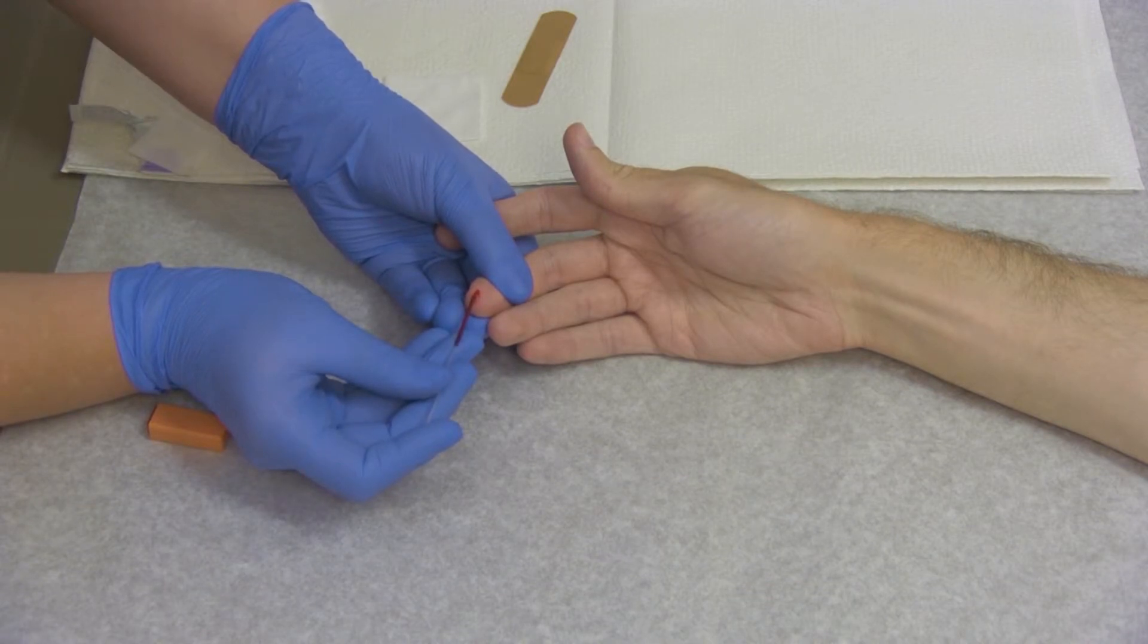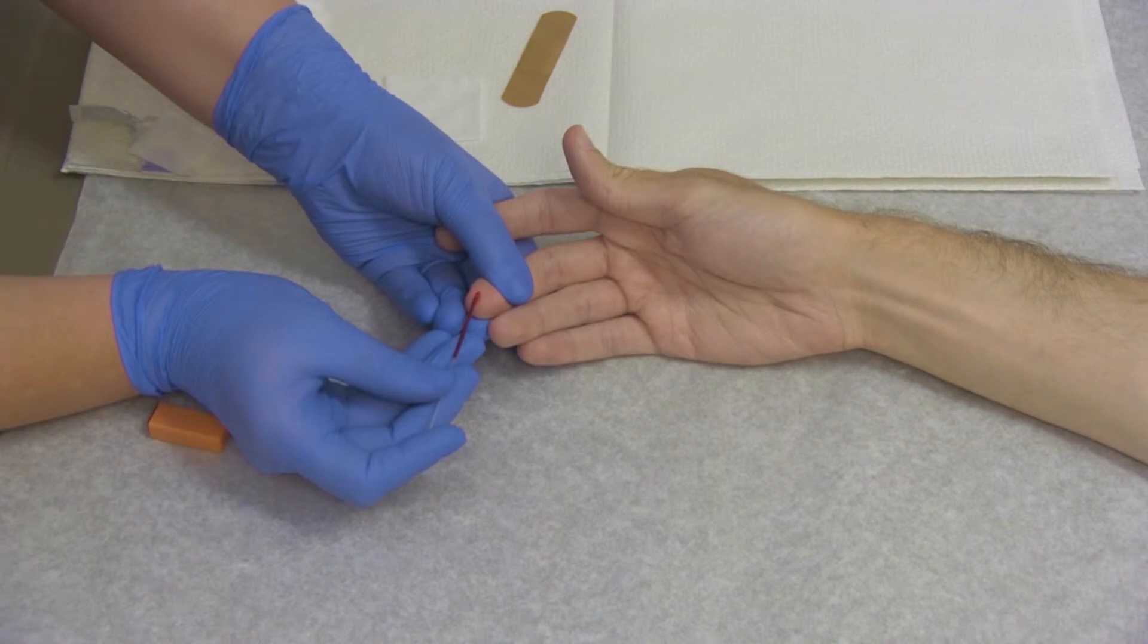Allow it to fill two-thirds to three-quarters full, keeping it at an angle. Place one of your fingers over the end of the tube to keep the blood from coming back out.